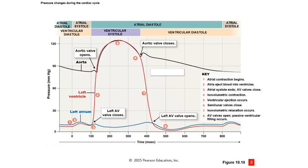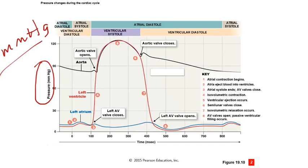There is a graph you really need to study and own — you'll be working with it on mastering assignments. The y-axis shows pressure in millimeters of mercury. The black line at the top is aortic pressure, the red is left ventricular pressure, and the blue is left atrial pressure. Across the top you have ventricular diastole, ventricular systole, and then back to rest. The left atrium shows only a small rise during atrial systole because the atria don't need to generate much pressure.